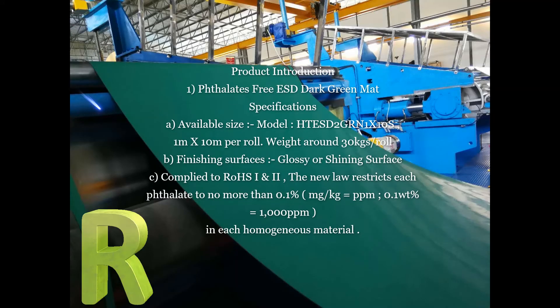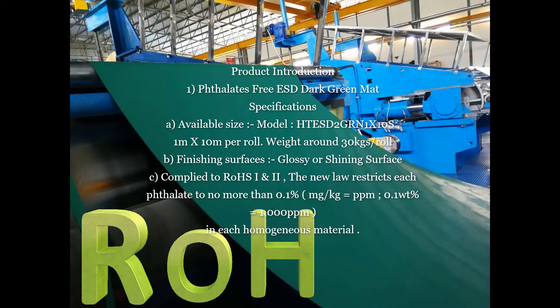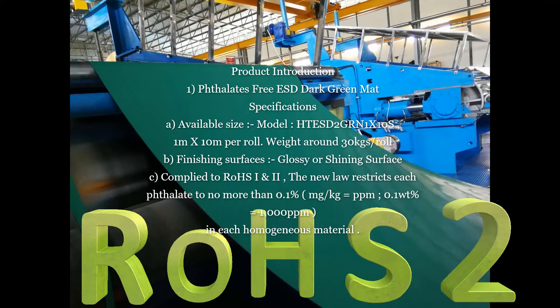Product 1: Phthalate-free ESD Dark Green Mat Specifications. A. Available size — model HTESD 2 GRN1 x 10S, 1 m x 10 m per roll. B. Finishing surface: glossy or shining surface. C. Compliant with RoHS rows 1 and 2 — the law restricts each phthalate to no more than 0.1% or 1000 ppm in each homogeneous material.